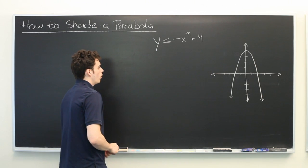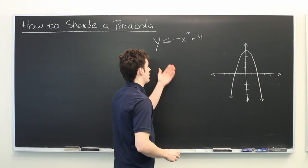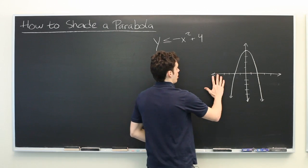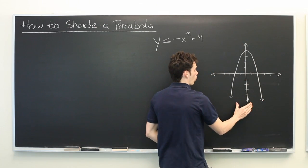So the question here is, what set of points will satisfy this inequality? Should we shade this region or this region?